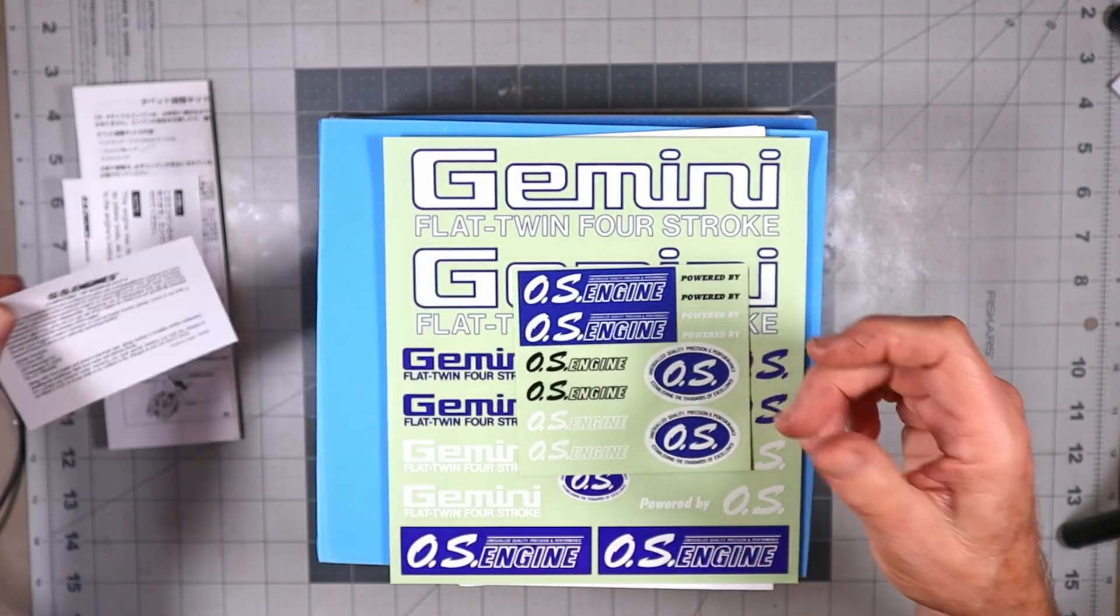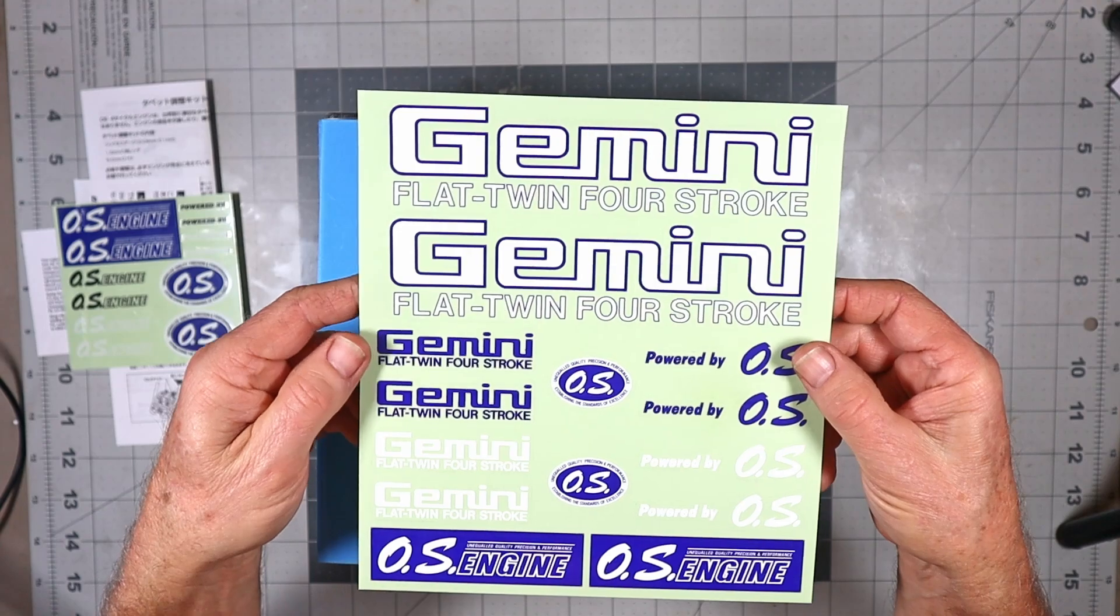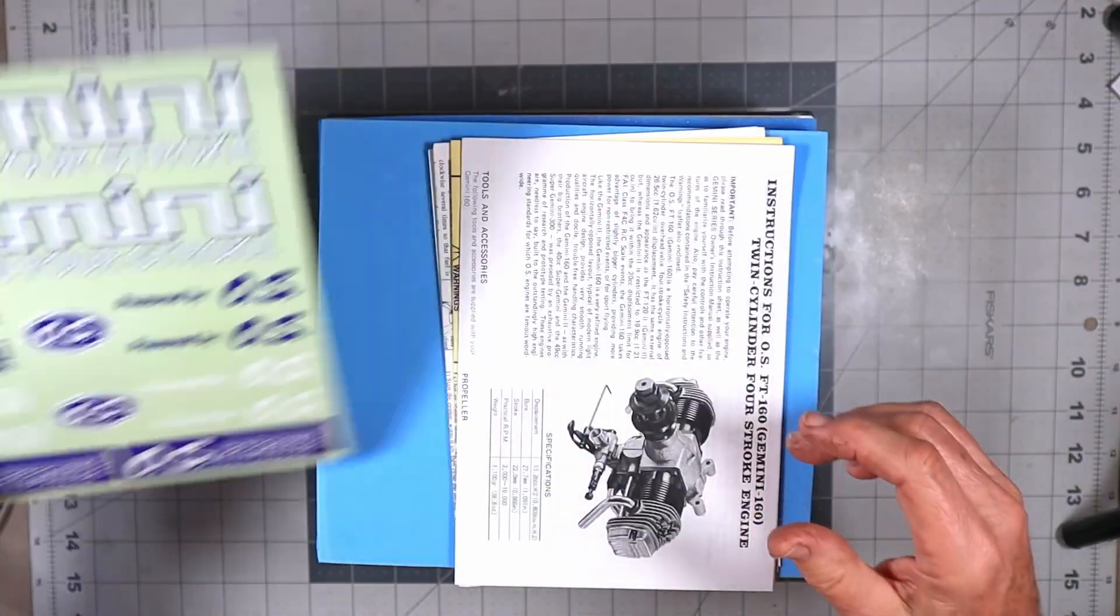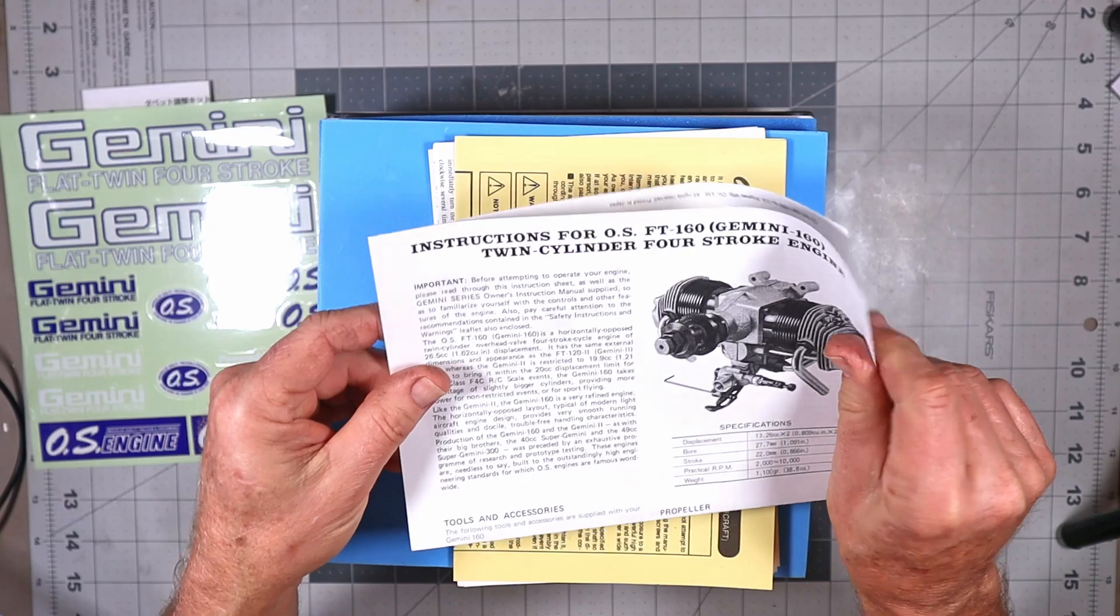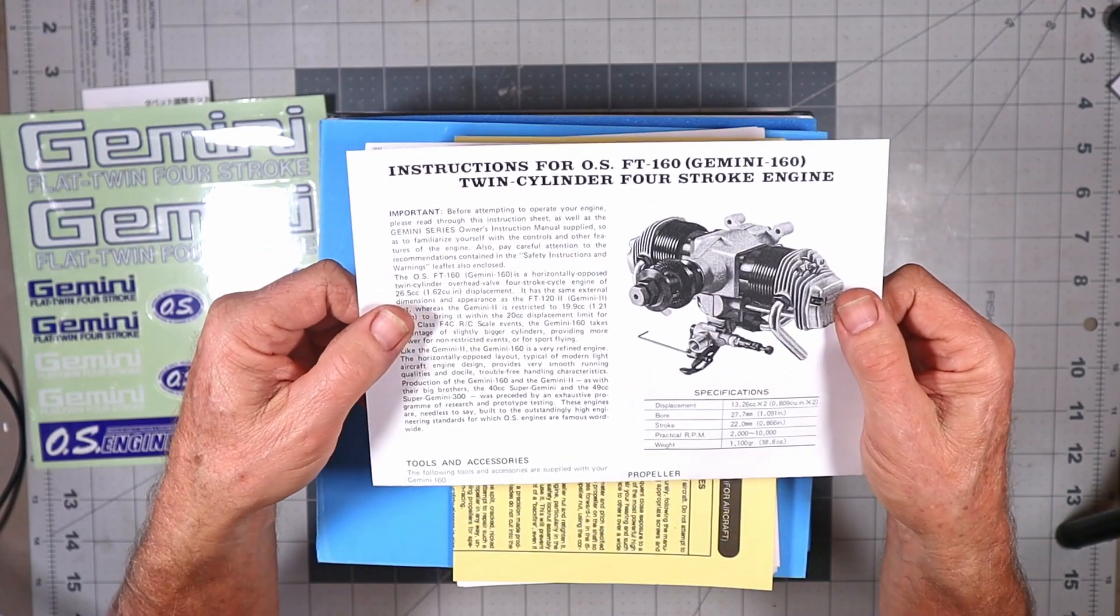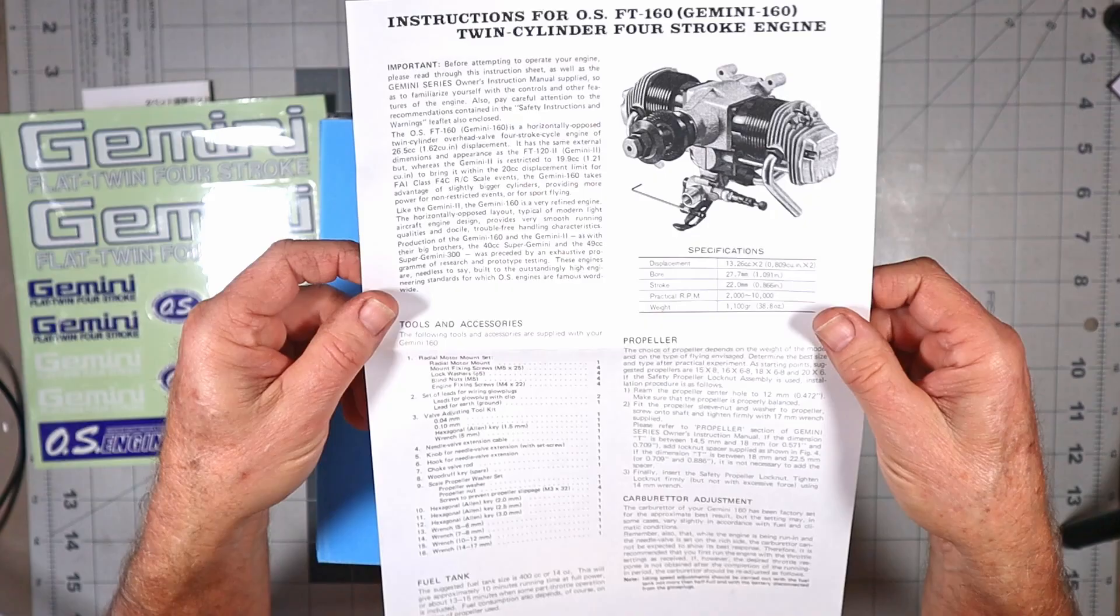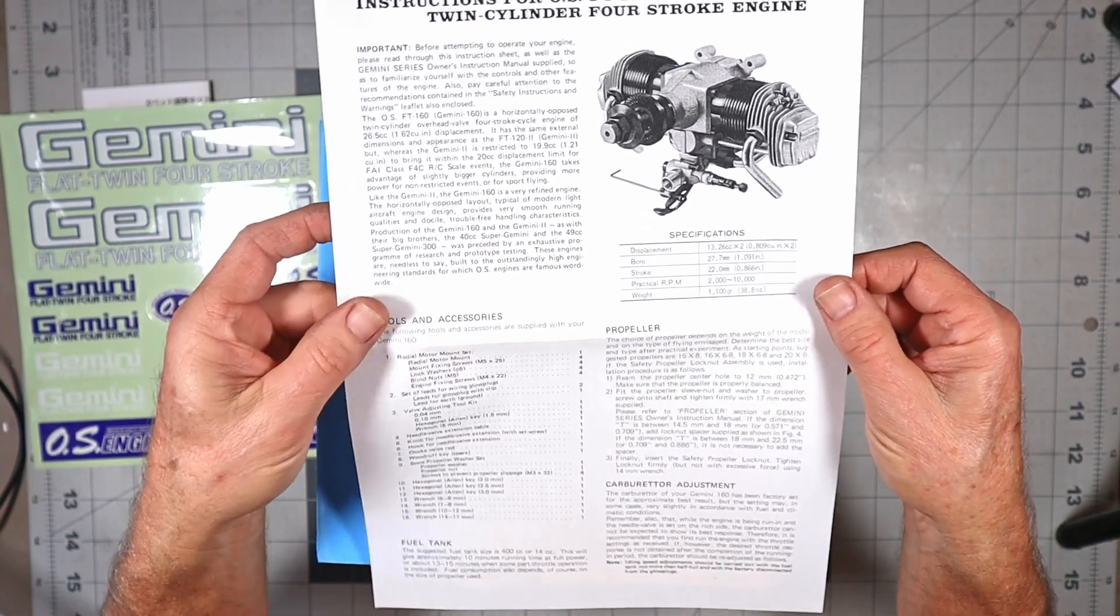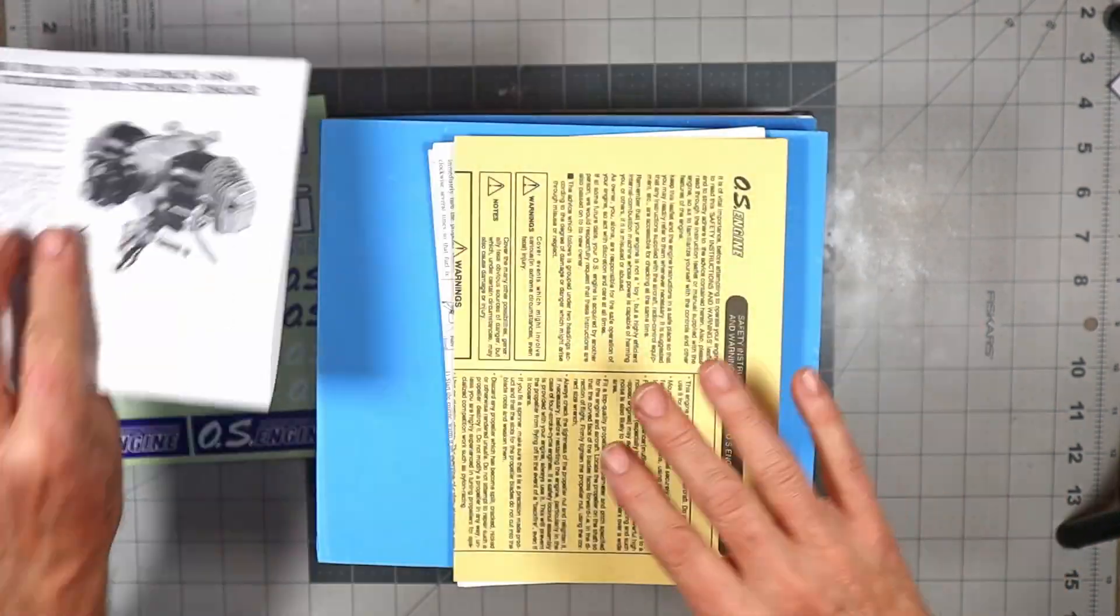Here's one decal sheet, and here's another that says Gemini on it. People would plaster that all over their planes because they were so proud of it, which I don't blame them. Here are instructions for the OS FT 160 Gemini twin-cylinder four-stroke engine - just a very brief instruction set with a parts list.